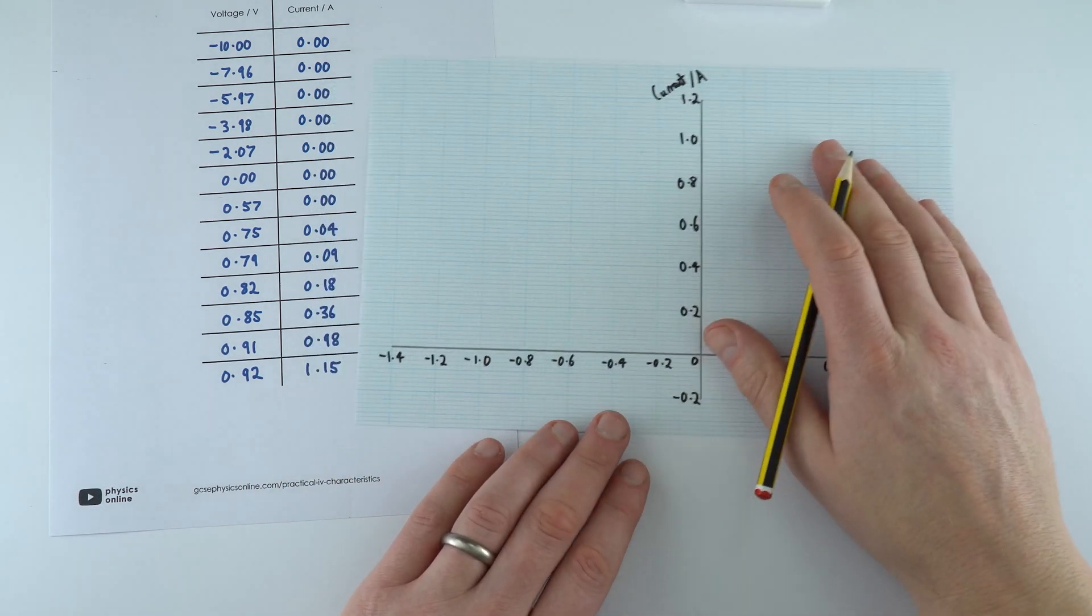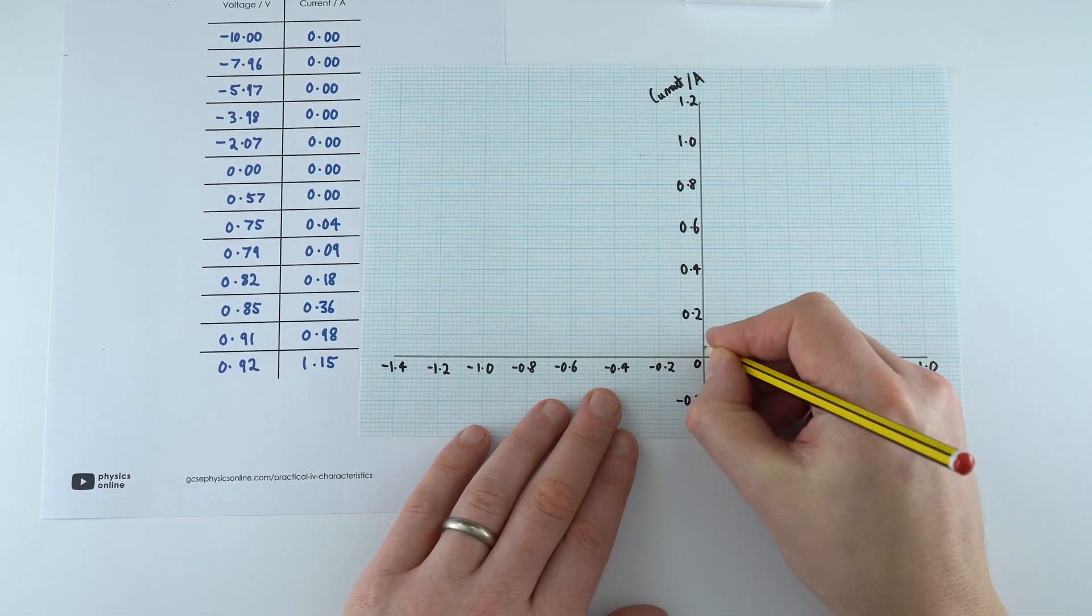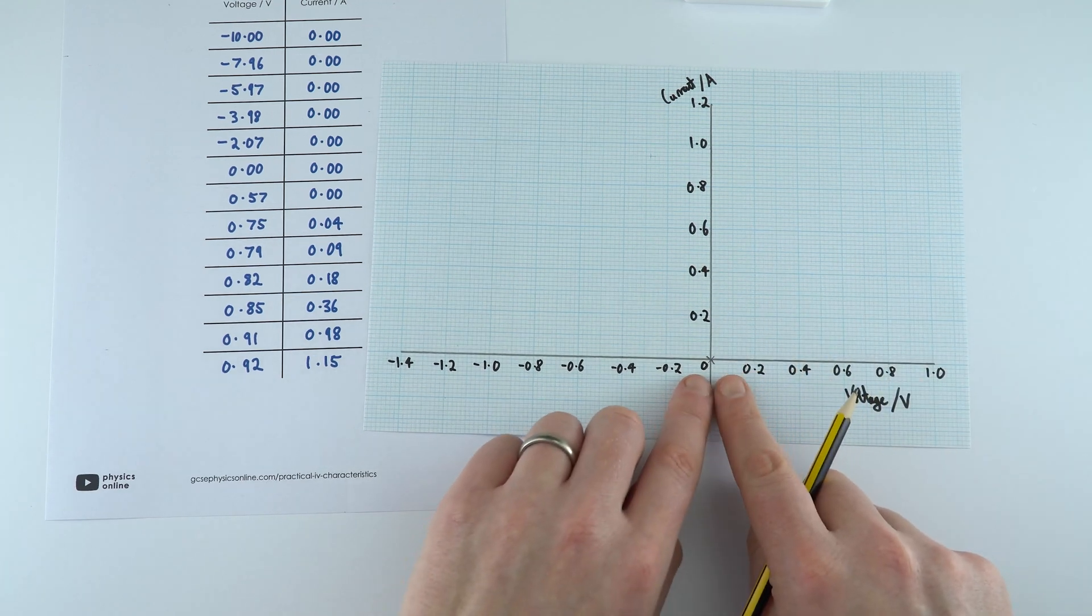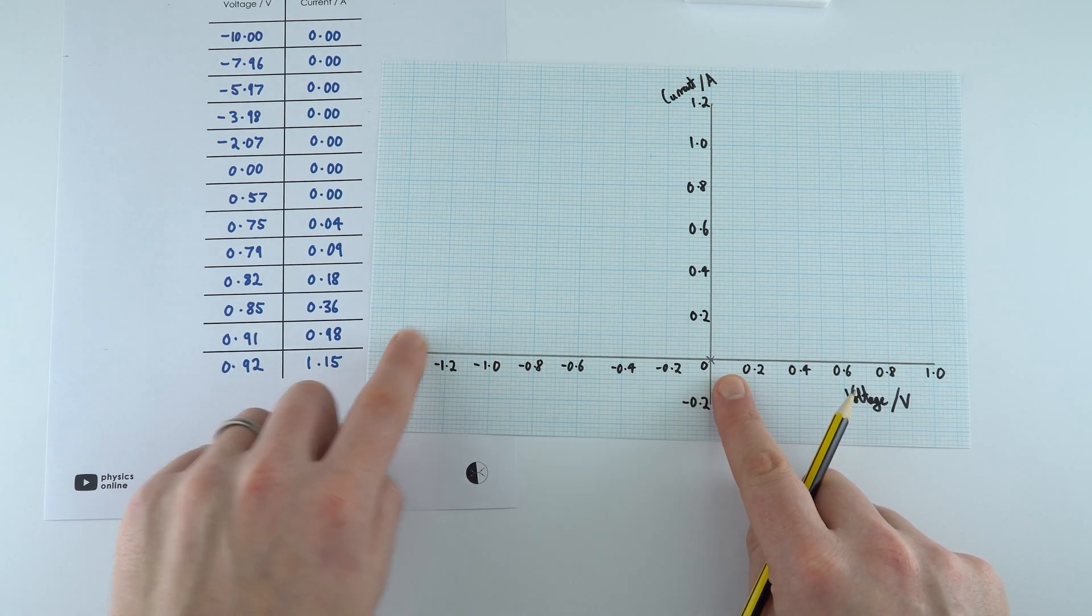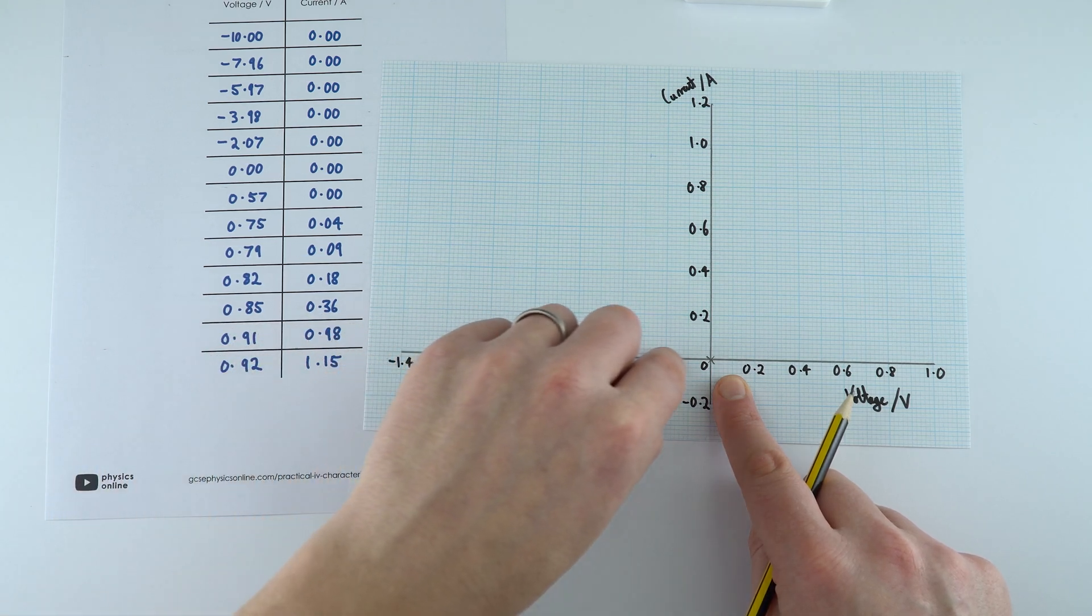So basically let's start at zero. When you have zero voltage we have zero current. When we've got negative values of voltage over here we'd also have zero current as well, so effectively the line is going to be going along this part of the graph.